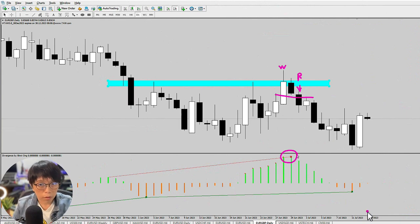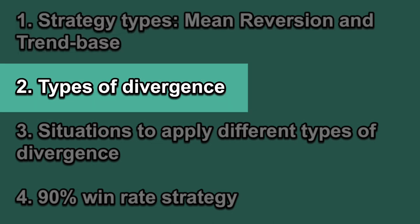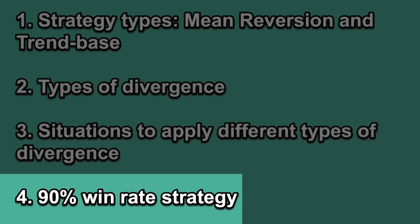Let me explain today's module. First, we're going to talk about the type of trades that you are likely going to encounter. Second, we're going to work on the divergence that you might see. Third would be under what situation you would want to apply the divergence. Fourth, I'm going to combine the divergence with wash and rinse, and you're going to find that your profitability and accuracy will greatly increase with this strategy.